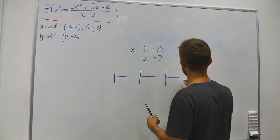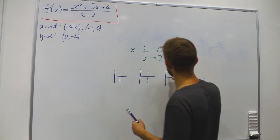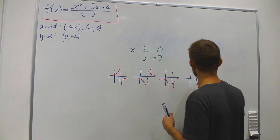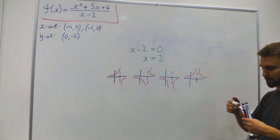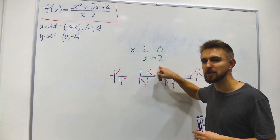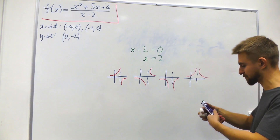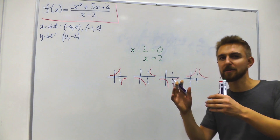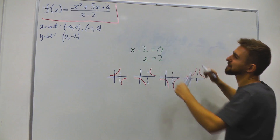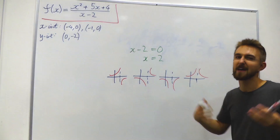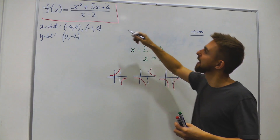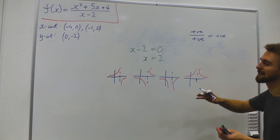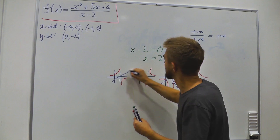We know there's a vertical asymptote at x = 2, but what kind? There are four different ways it could look. To determine the shape, we evaluate the function just either side of x = 2. Just above 2: the top line (roughly 4 + 10 + 4) is positive, and (2+ − 2) is a small positive number, so the function is positive. This eliminates two of the four possible forms.